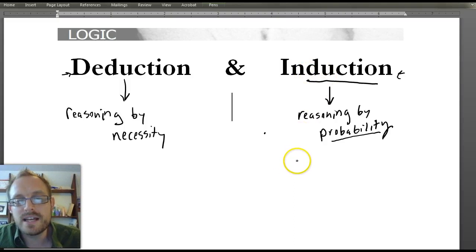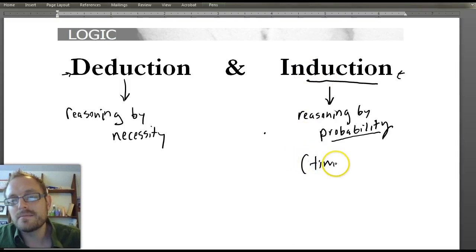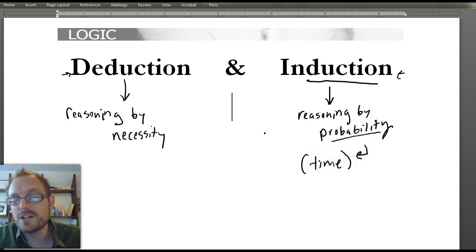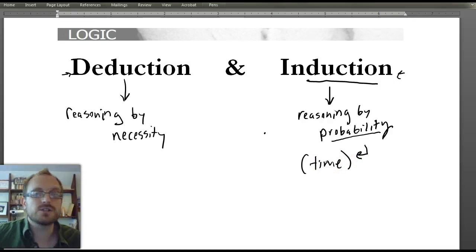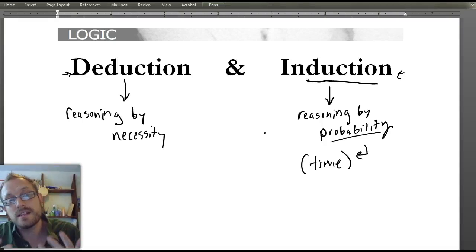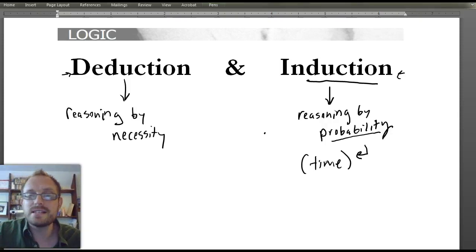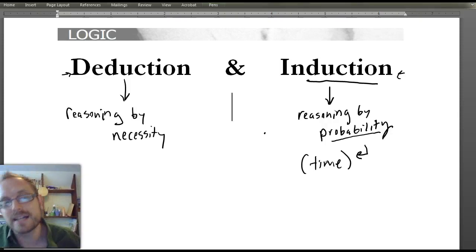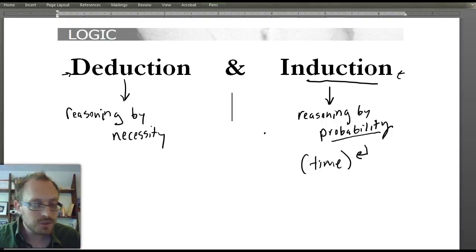Almost all arguments that deal with time tend to be inductive arguments because of probability. What do modern scientists use — deduction or induction? Most scientists run experiments, observe them, and try to figure out what's probably the case. So some experimental science is inductive, but the mathematics of experimental science would be deductive. It's actually a combination, which is pretty interesting.